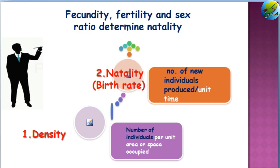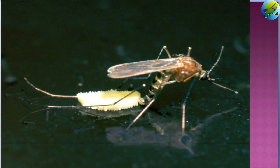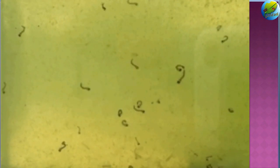The next attribute is natality or birth rate. We have already discussed in the previous class that it means the number of individuals produced per unit time. We also discussed the various factors determining the birth rate, such as fecundity, fertility, and sex ratio. Fecundity refers to the number of eggs laid by females, and fertility means the actual production of offspring from the eggs that are laid.